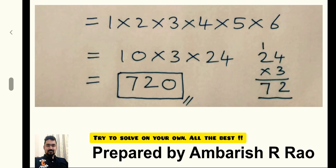Expanding 4 factorial as 1 into 2 into 3 into 4, and multiplying with 5 and 6, we get 720 as the answer. 5 into 2 is 10 and 6 into 4 is 24.